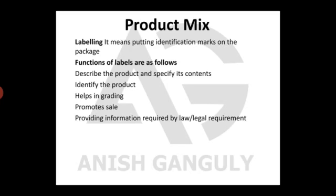Labeling also helps in grading products — for example, Red Label and Green Label in tea. It promotes sales and provides information required by law. Since the government has made full information disclosure mandatory, manufacturers are also protected — no one can claim they were unaware of warnings about fatal use or overuse of the product. Such warnings are already written on the label.